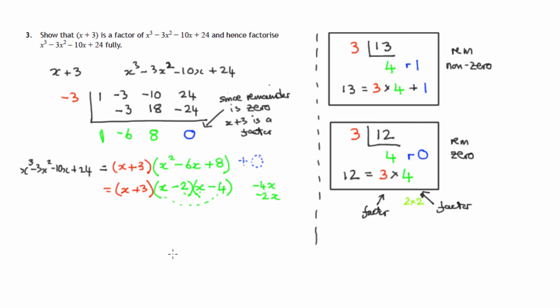Just check that the last two terms multiply do give us positive 8 and they do. Negative 2 times negative 4 does give us positive 8. So x squared minus 6x plus 8 can be further factored into x minus 2 times x minus 4. And there's the final factorization. There's three factors: x plus 3 times x minus 2 times x minus 4. And that's this polynomial fully factored.